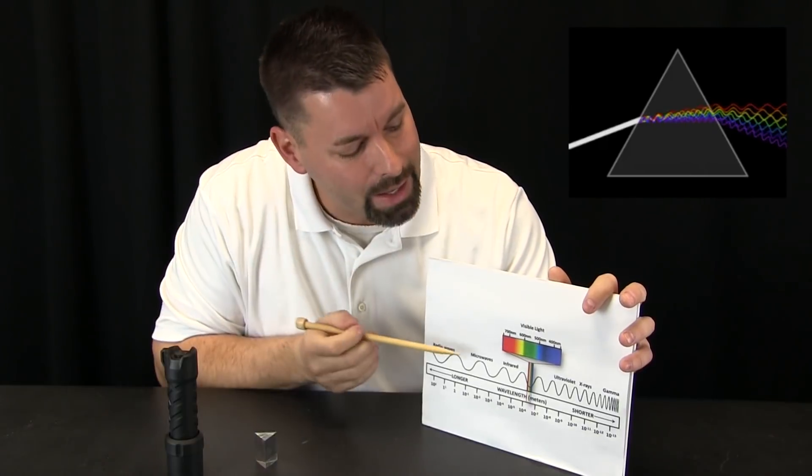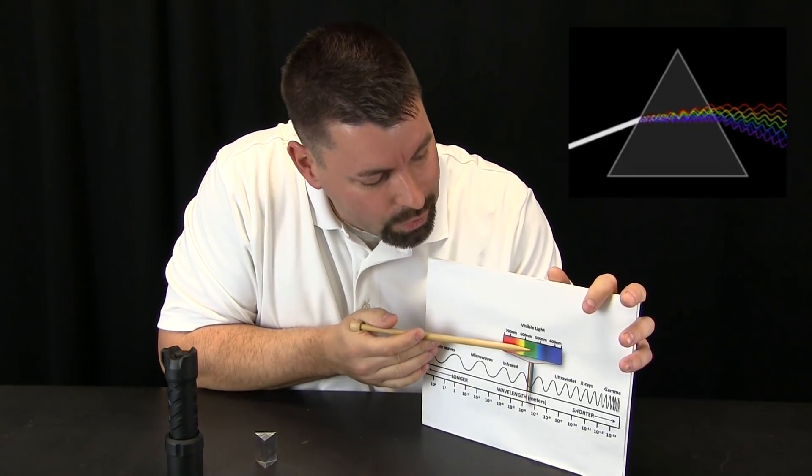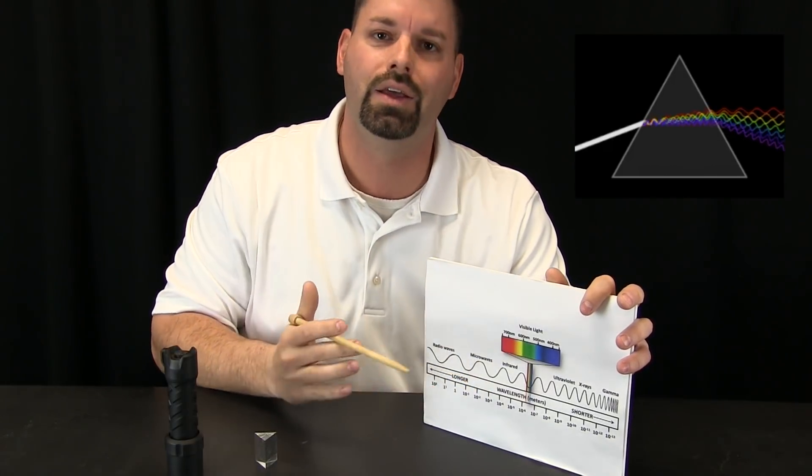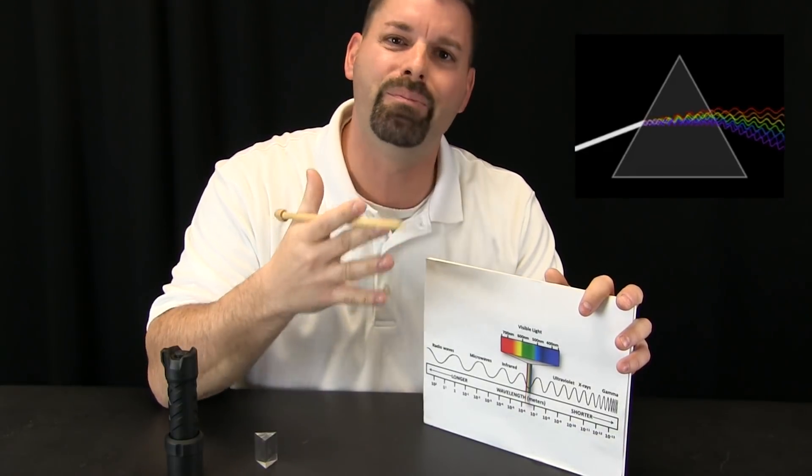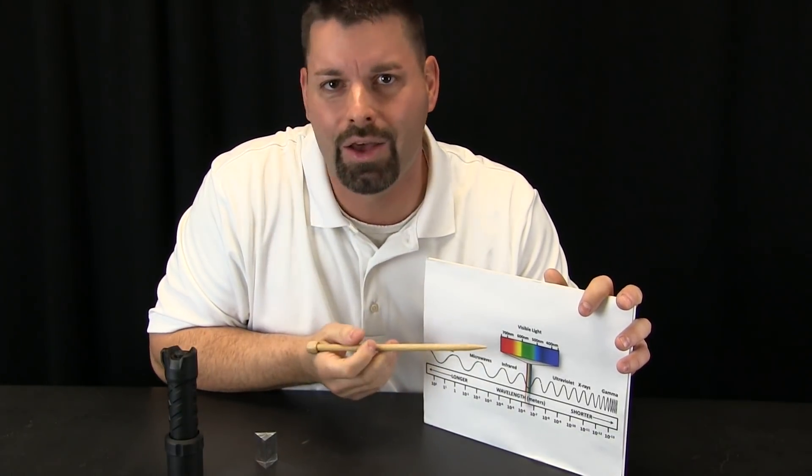Even light from the Sun is made up of red, orange, yellow, green, blue, indigo, and violet. We just have to slow it down and bend it so that we can see those colors.